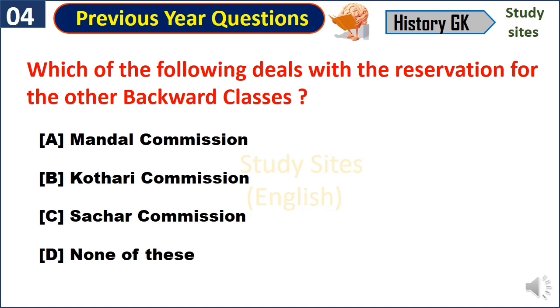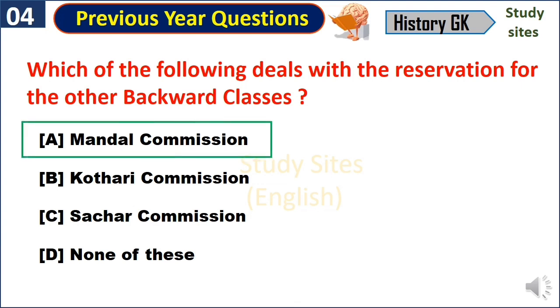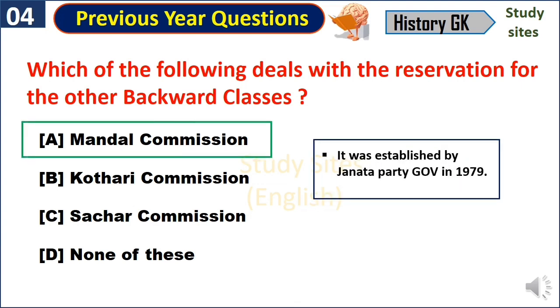Which of the following deals with the reservation for the other backward classes? Mandal Commission. It was established by the Janata Party government in 1979.